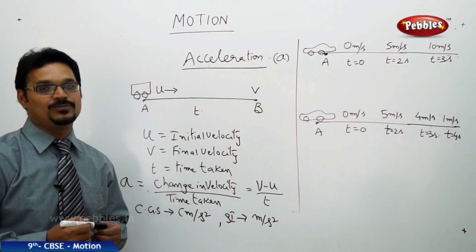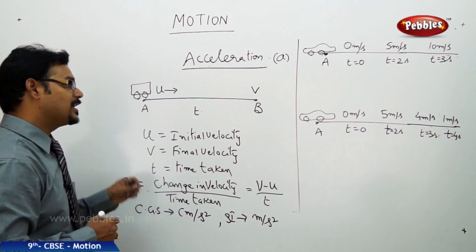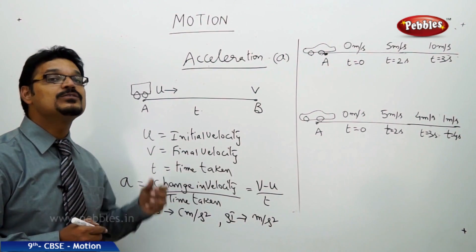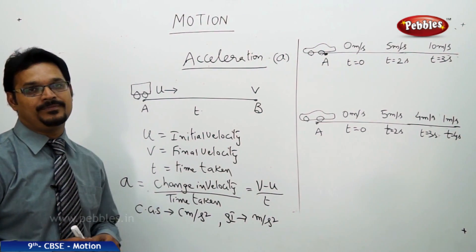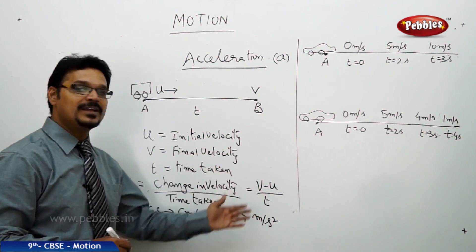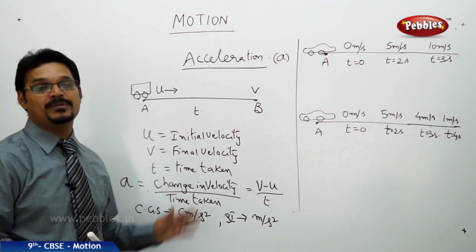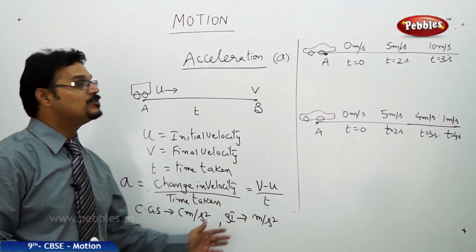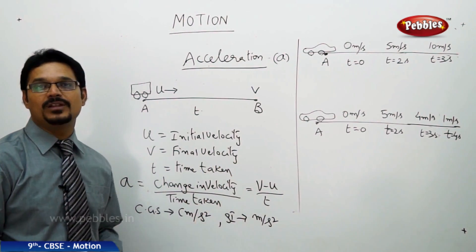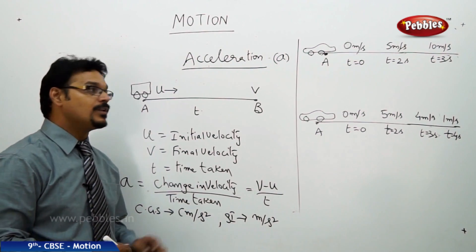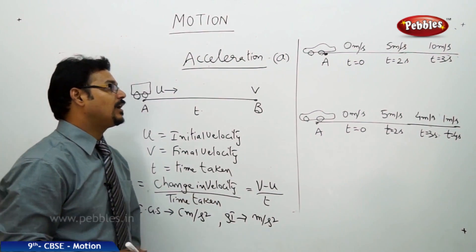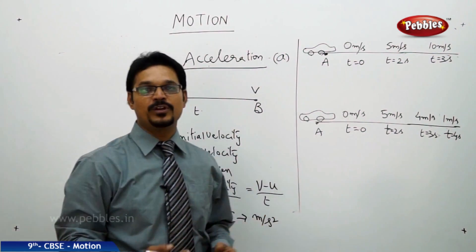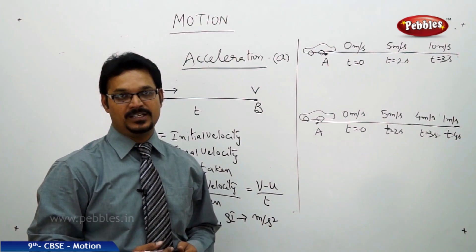Acceleration tells you whether the car is moving faster or whether the car is moving slower, because it is change in velocity by time — it depends upon change in velocity. a = (v - u) / t is the formula. Now, coming to this numerical, let me explain you more in detail about acceleration.